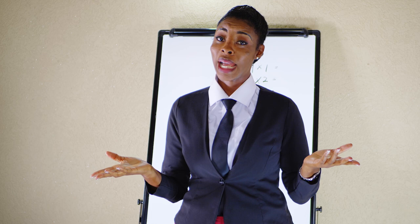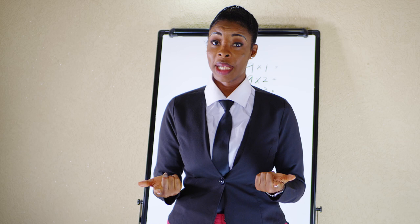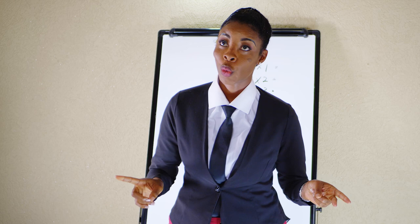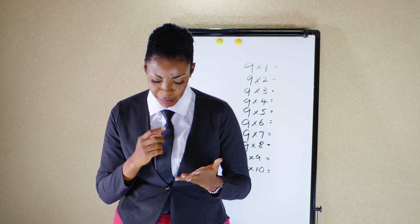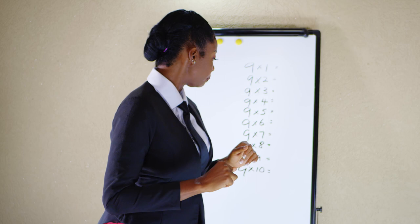We will start with multiplication, and some of the more challenging ones, for example, is the nine times table. Do you know your nine times table? One nine is nine. Two nines are eighteen. Three nines are, what is three nines? Three nines? Look at me. This is one by nine.